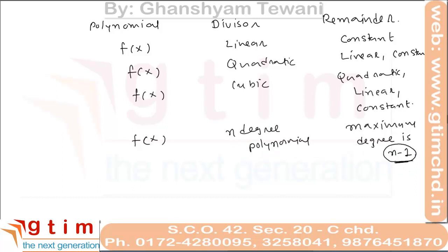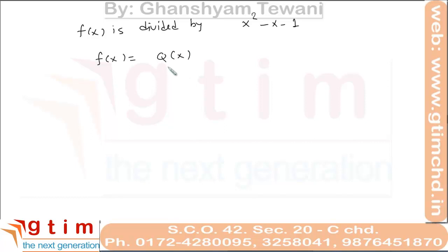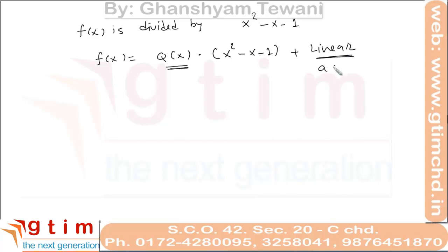For example, if f(x) is divided by x squared minus x minus 1, then we write f(x) equal to q(x) times the divisor x squared minus x minus 1 plus the remainder. The remainder here will be a linear function, written as ax plus b. The remainder may be constant, in which case the value of a will be 0.